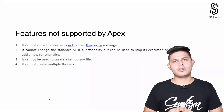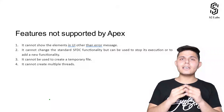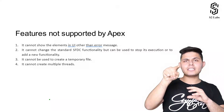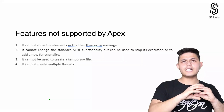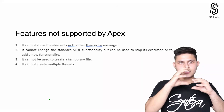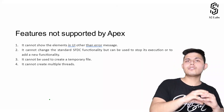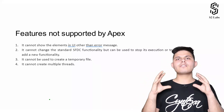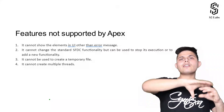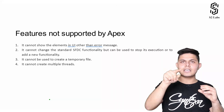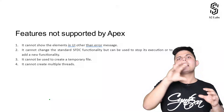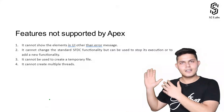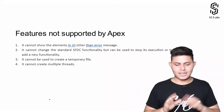If you want to change that functionality, you cannot. But you can instead override it — so that whenever the Save button gets pressed, instead of calling the standard SFDC functionality, the Salesforce platform calls the code which is written by you. You cannot change the standard functionality, but you can override its execution by adding your own functionality. This is something we'll understand in more detail later.